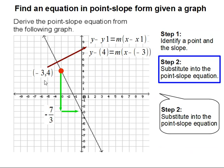We'll start off by substituting in the point negative 3 comma 4. Then we're going to substitute in our slope which goes in for m.